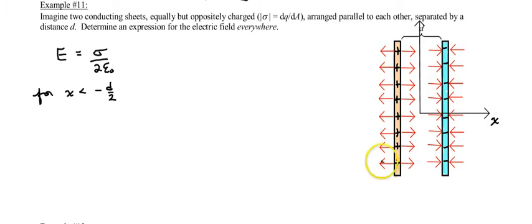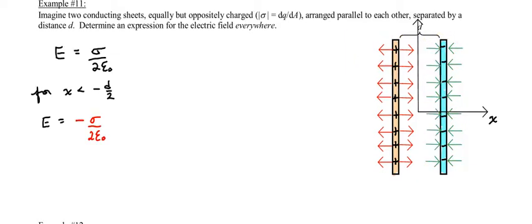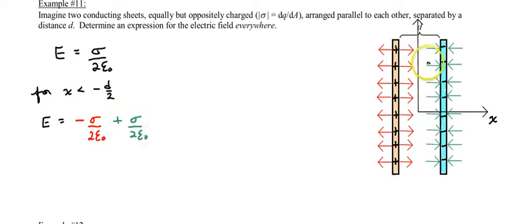So what we have here is from the positive plate, on this left side, we have E equals negative sigma over 2 epsilon naught. But we also have field lines going towards the negative plate — these field lines are constant in magnitude. To make this more visual, I've drawn green electric field lines for the negative charge plate, and red electric field lines for the positive charge, but they're both equal in magnitude. The green ones extend all the way out over here, so you have a positive sigma over 2 epsilon naught from those field lines. They occupy this region as well. Hopefully you see that these electric field lines will cancel out, so for x less than negative d over 2, we have E equals 0.